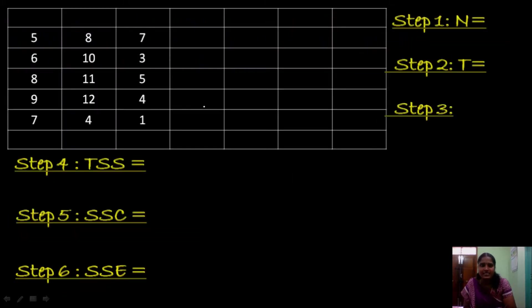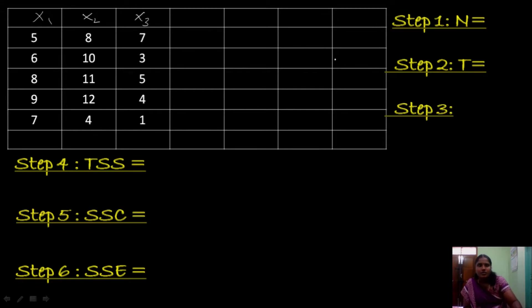Let me first construct a table where the first, second and third column consist of the given set of values. I am going to assign the variables x1, x2 and x3 for these. Here, n is the total number of observations given in our problem. The total number of observations here is 15, so totally we are having 15 observations.